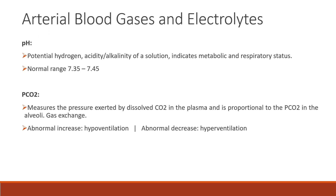First is pH, or potential hydrogen. This measures the acidity or alkalinity of a solution and indicates the metabolic and respiratory status of the human body. The normal range is 7.35 to 7.45.